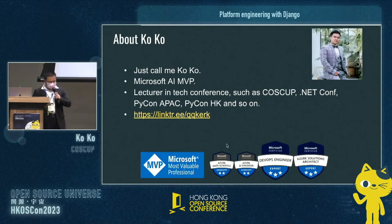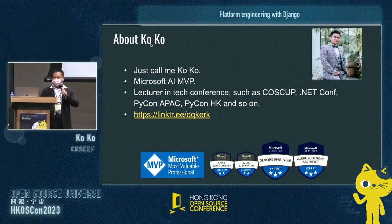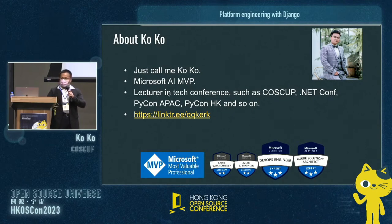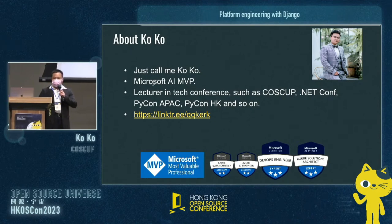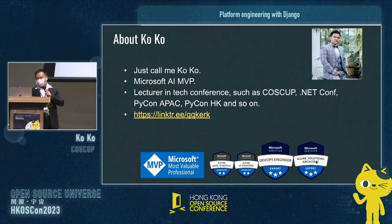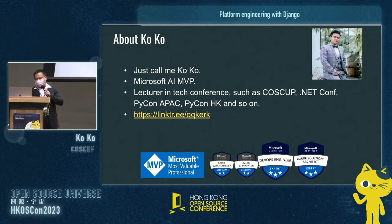Let me make a simple self-introduction. My name is Coco — this is my real name, so you can just call me Coco. I am a Microsoft AI MVP and a lecturer at many tech conferences, such as CosCon, DjangoCon Conference, PyCon APEC, PyCon HK, and so on. You can find me on Linktree, not LinkedIn.